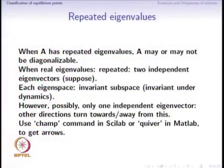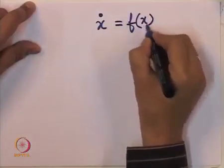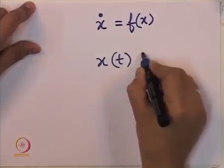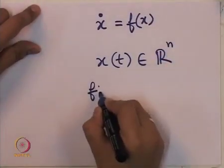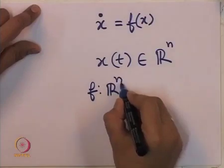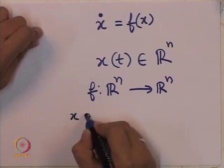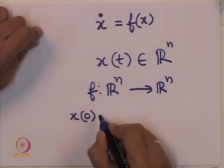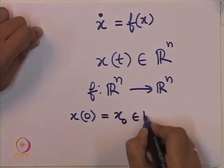The next important question we will start studying is: when does there exist a solution to the differential equation x-dot equals f, in which x has n components at any time instant t, and hence f is a map from Rn to Rn. For this situation, suppose we are given the initial condition x0 — x at time t equals 0 is some vector x0, which is an element of Rn.